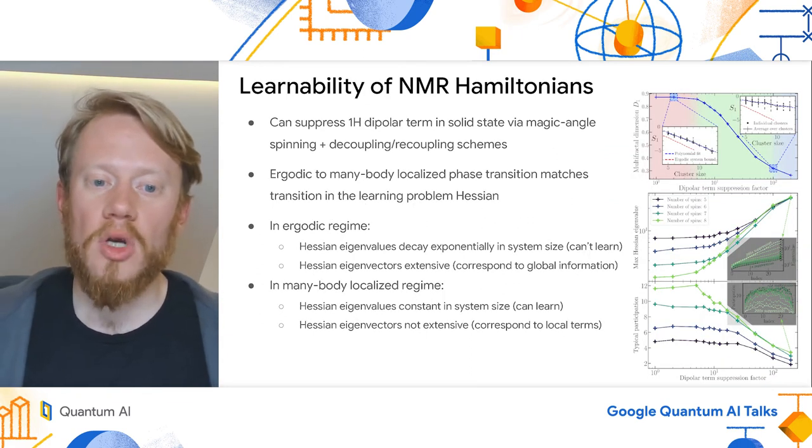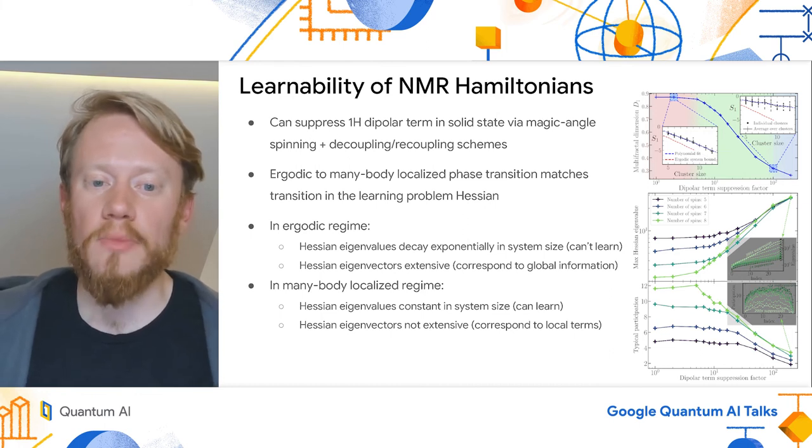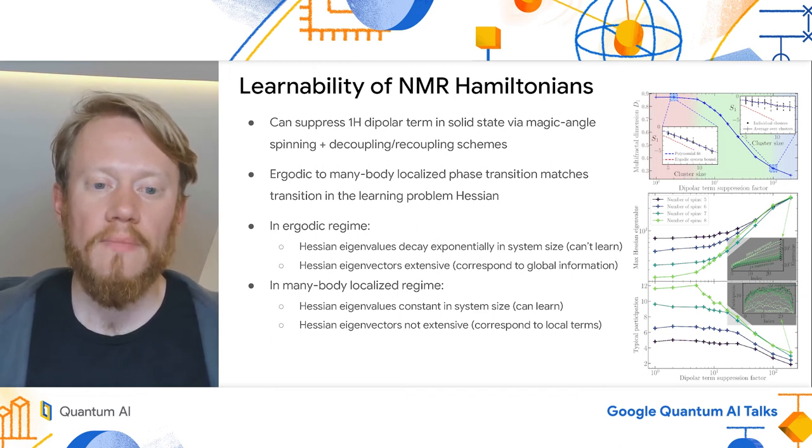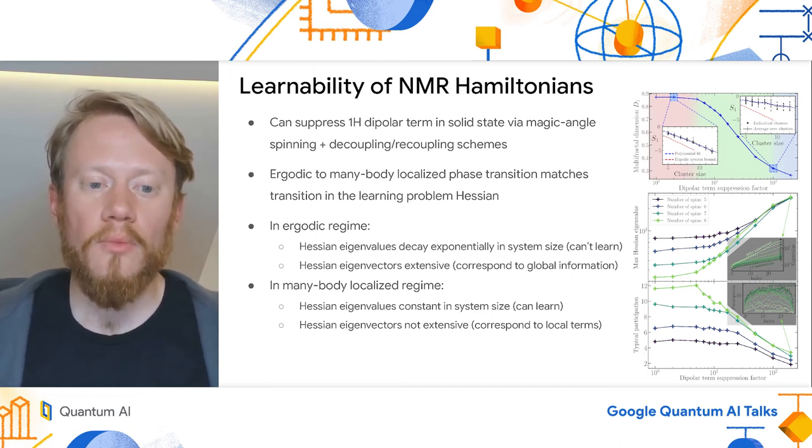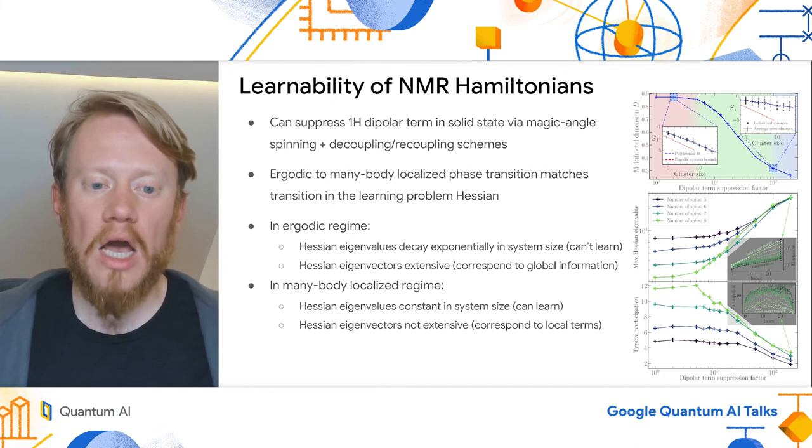Now, equipped with the Fisher information, we can make direct the connection between learnability and ergodicity, or at least demonstrate strong numerical evidence for this. As an example system, we took the protein ubiquitin and isolated about a hundred small clusters of between five and eight spins within it, by just cutting them out from the rest of the protein.